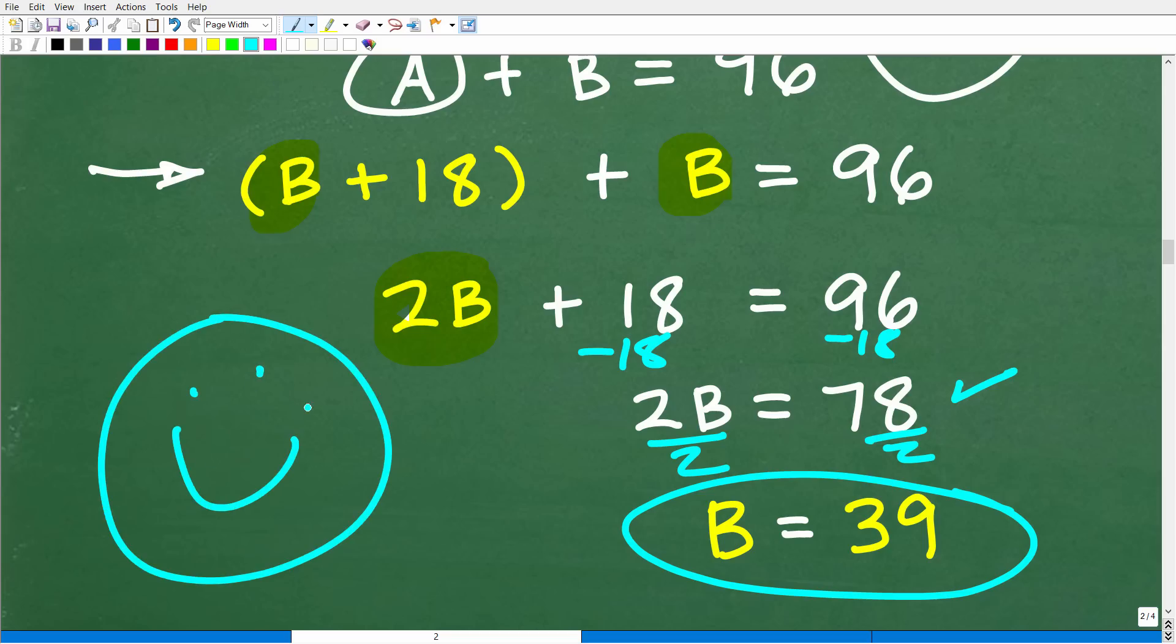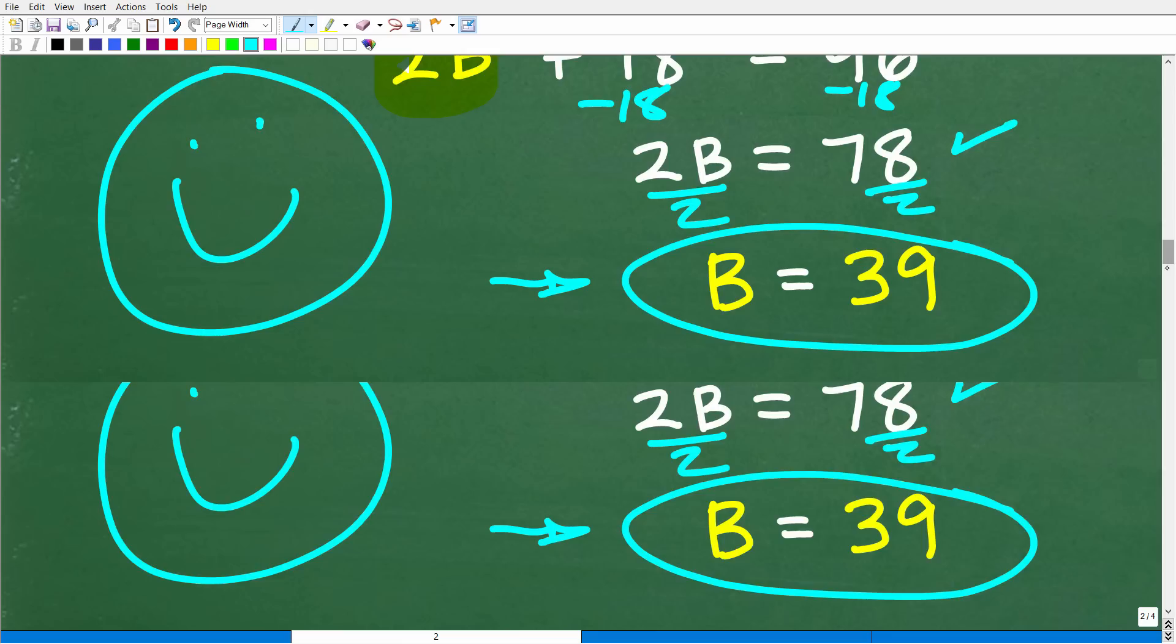All right, I know we're very excited. We're like, yes, yes, we're solving the problem. But what does this mean? B is equal to 39? Well, if you recall, this was the number of seats that bus B has. Now we need to figure out what the number of seats bus A has.